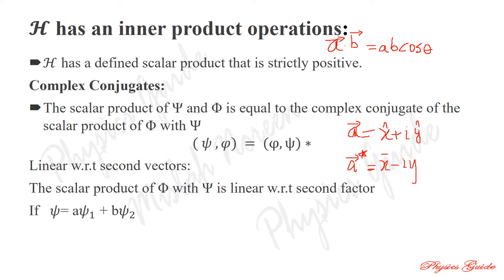then the complex conjugate of A, written A*, equals x minus iy. If a vector is x plus iy, its complex conjugate is x minus iy. This is the complex conjugate of a scalar product or inner product operation.